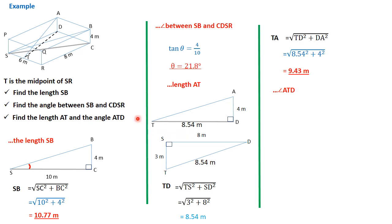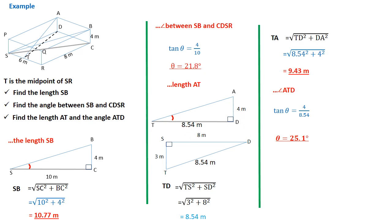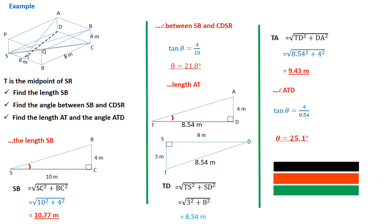We're told to look for the angle ATD. Although they did not explicitly say it, this is the angle between the line AT and the plane CDSR. The projection of AT on the plane CDSR is TD. So we're looking for the angle between AT and TD. Therefore, tan theta equals opposite over adjacent, which is 4 over 8.54. Looking for the tan inverse of that gives 25.1 degrees.